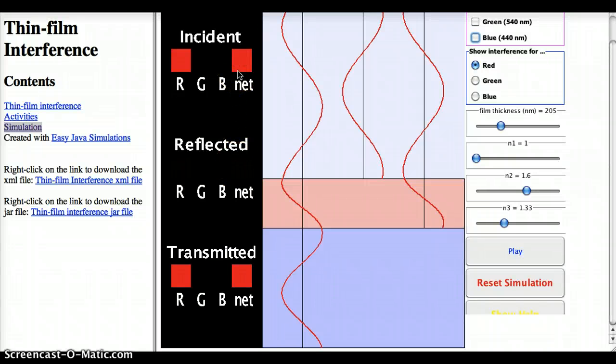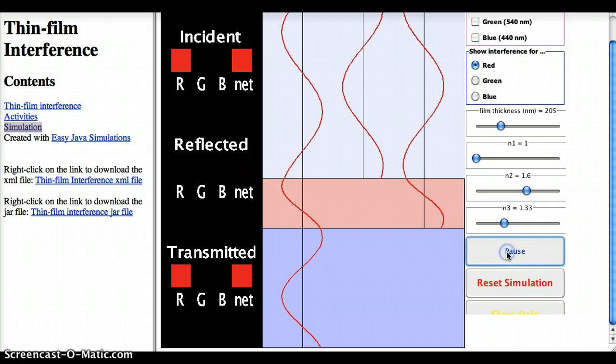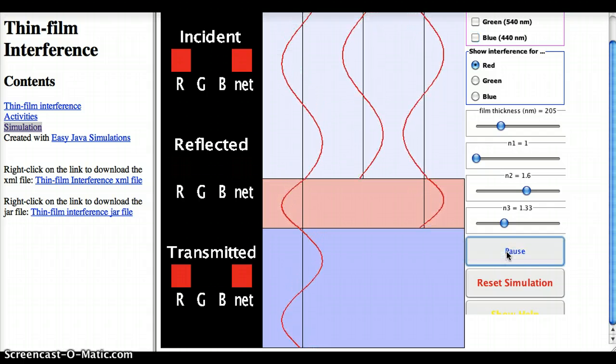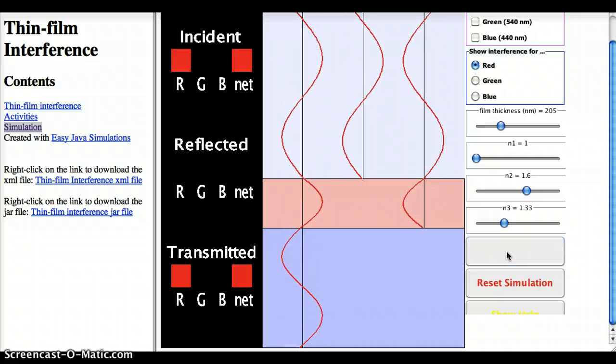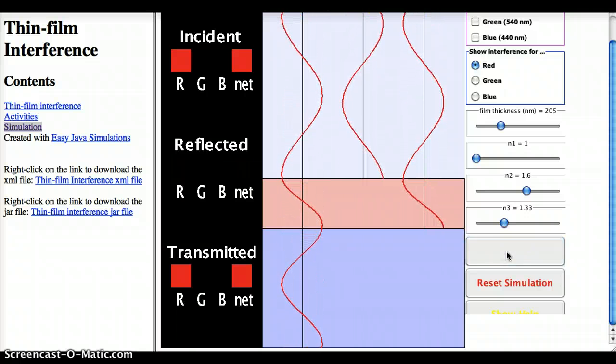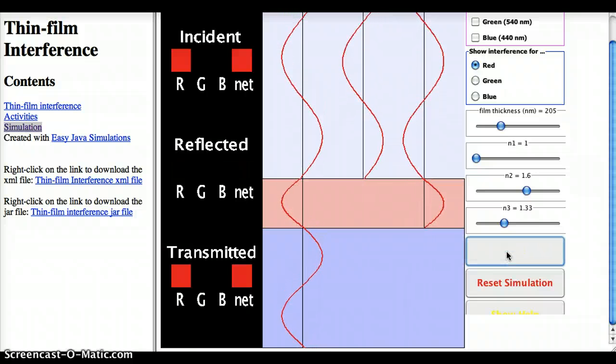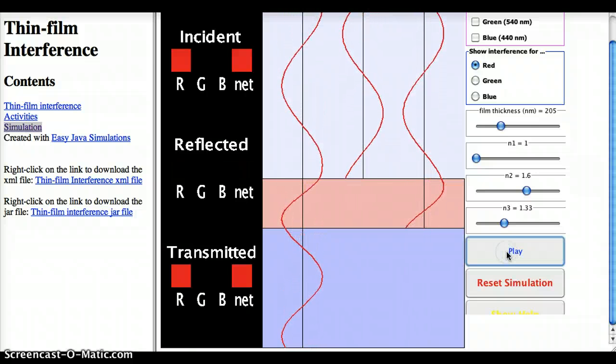But we did have incident light that had to go somewhere. So what's happening is it's being transmitted. There's lots of light making it down into our third medium over here. Right now, the simulation is paused. If I hit play, we can watch these waves move. So there you can see each direction that each light wave is moving and what they look like as they travel being in phase or out of phase.